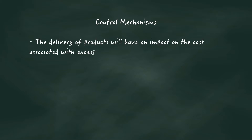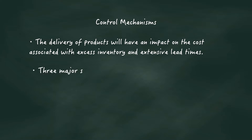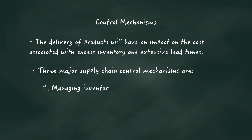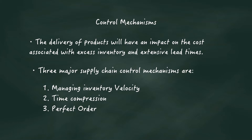The delivery of products will have an impact on the cost associated with excess inventory and extensive lead time. The three major supply chain control mechanisms adapted by all supply chain partners are managing inventory velocity, time compression, and perfect order.